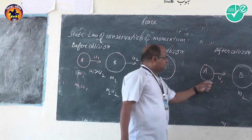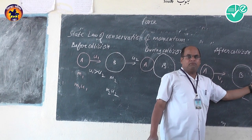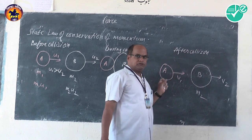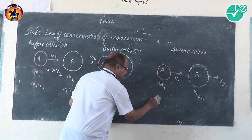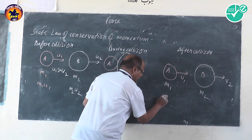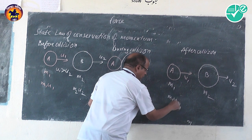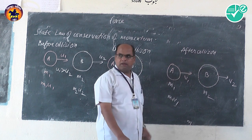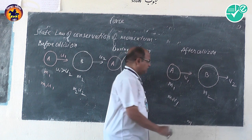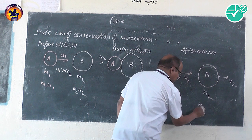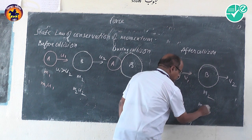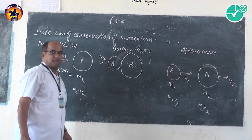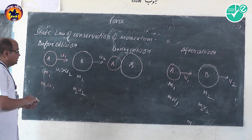Let V1 and V2 be the velocities of the two spheres after collision. Then after collision, M1 V1 will be the momentum of sphere A and M2 V2 will be the momentum of sphere B.